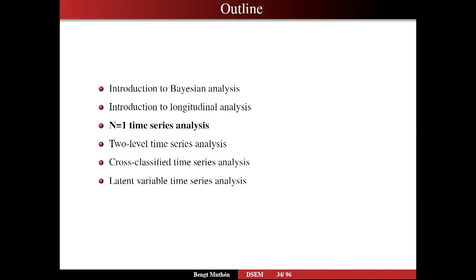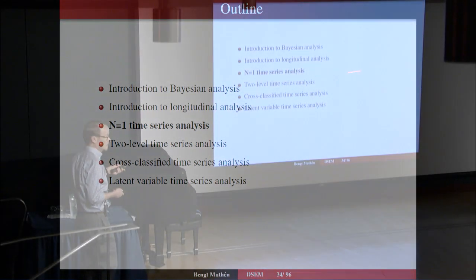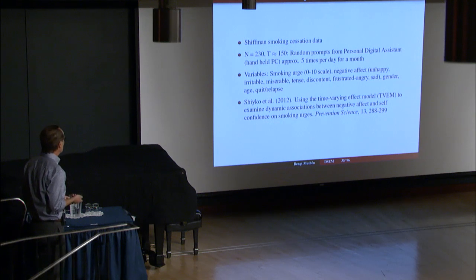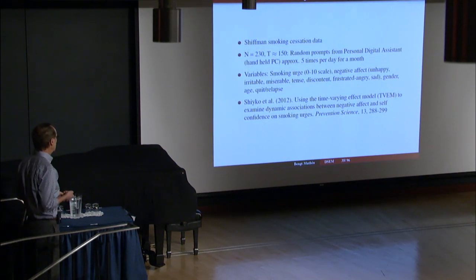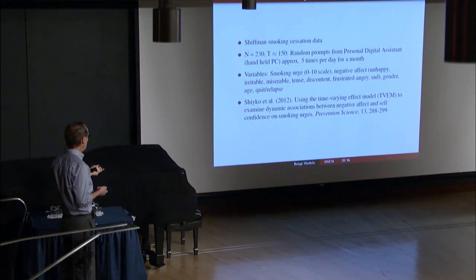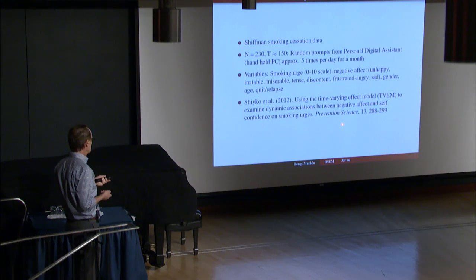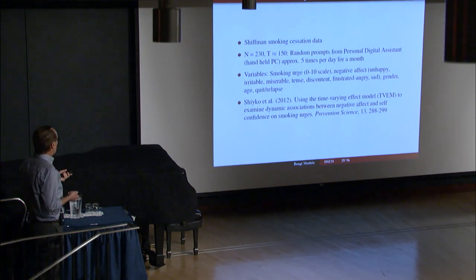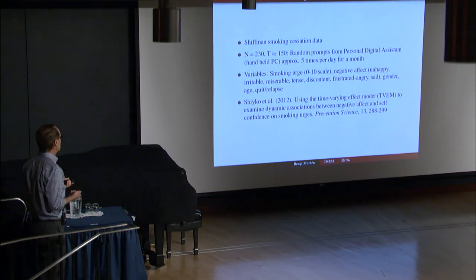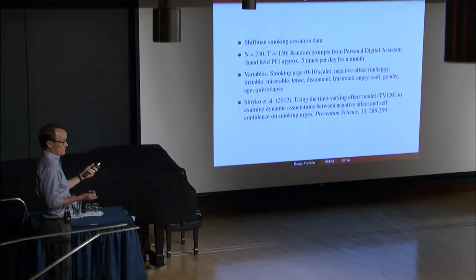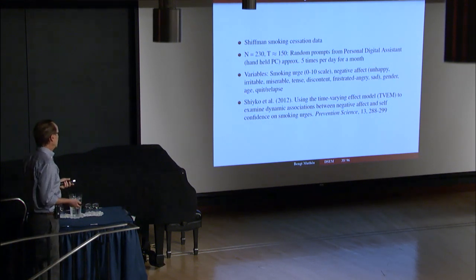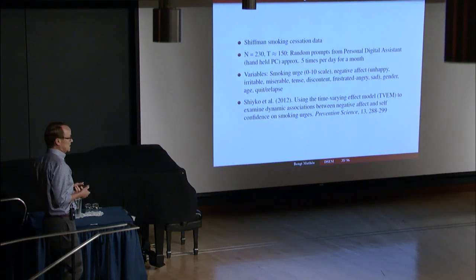It's a smoking cessation example using ecological momentary assessment-style data collection. We're going to do a whole series of analyses from N=1 to two-level to cross-classified, trend analysis, and time-varying effect (TVEM) modeling using cross-classified time series analysis. Here's the data description — data that Saul Schiffman was kind to provide, described in an article by Shilko in Prevention Science. About 150 time points per person, randomly measured during the day — about five times per day — via random prompts from a personal digital assistant, so not fixed time points but random, which causes time interval issues.